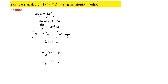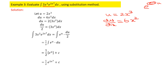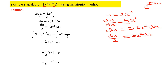Whenever an e-power function is given, take whatever is in the exponent as your u. Here, u = 2x³, so du/dx = 6x², or du = 6x² dx. We can write 6 as 2 × 3, so du = 2 · (3x²) dx, which means du/2 = 3x² dx.